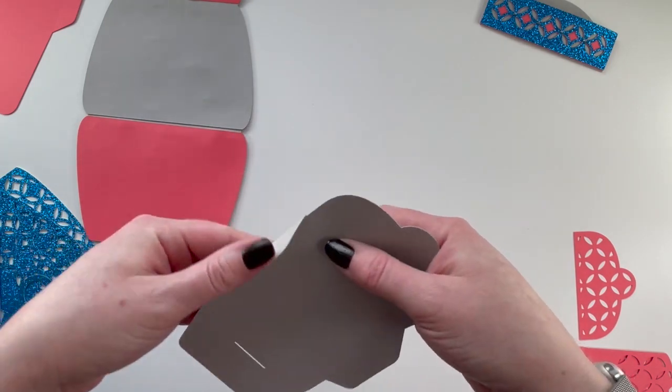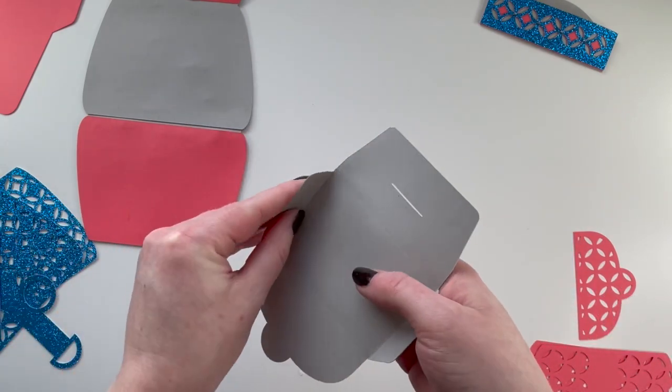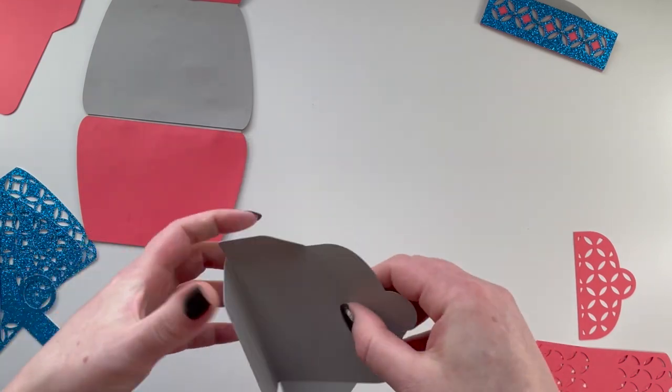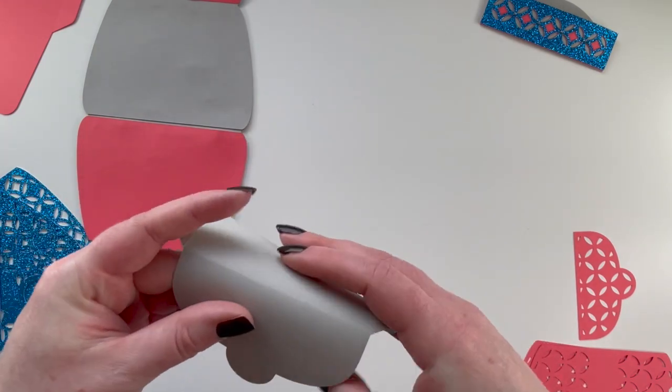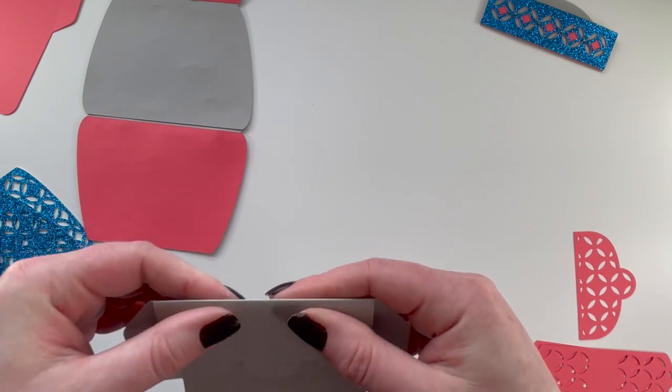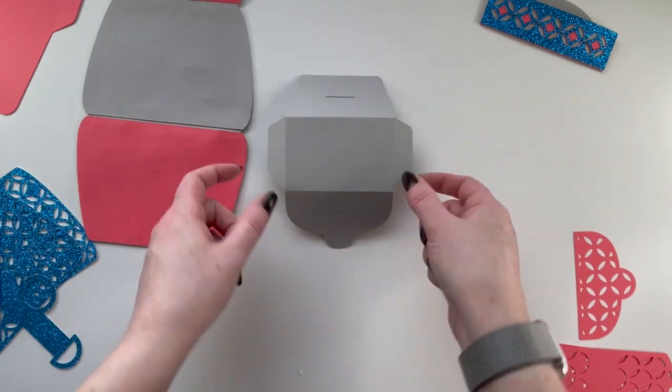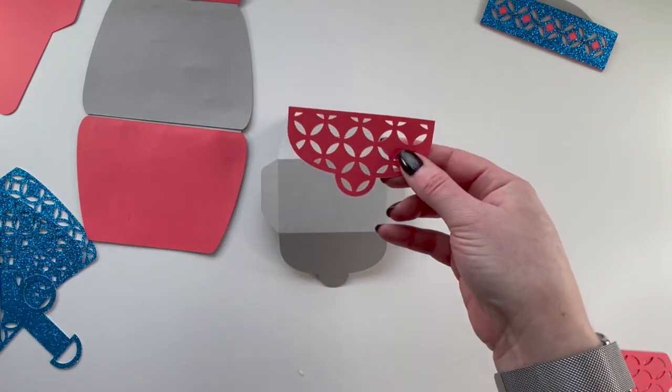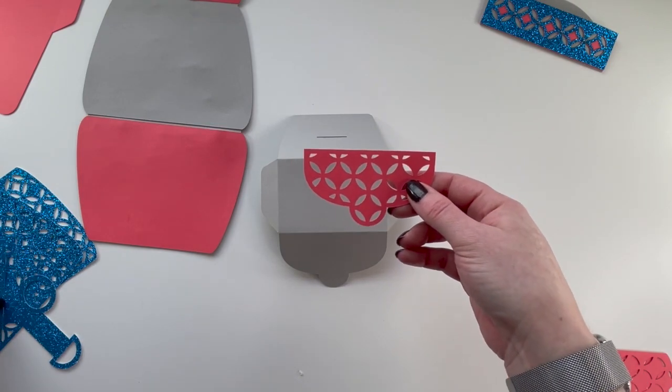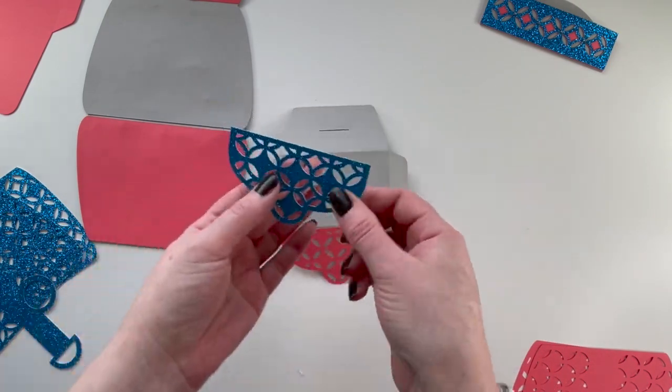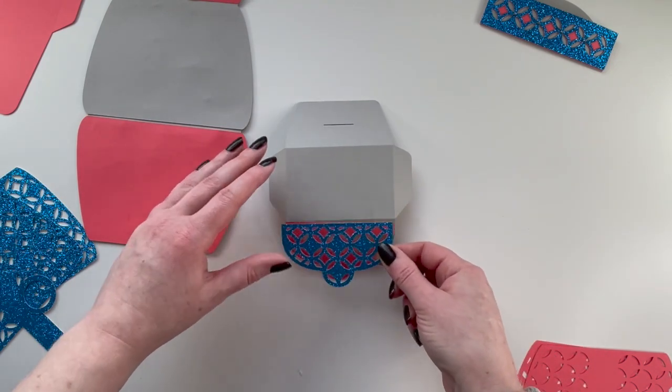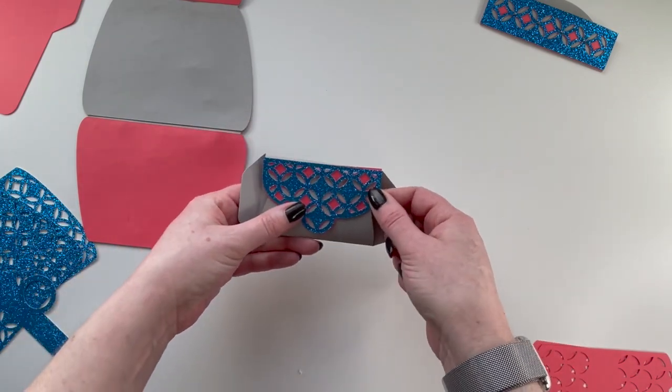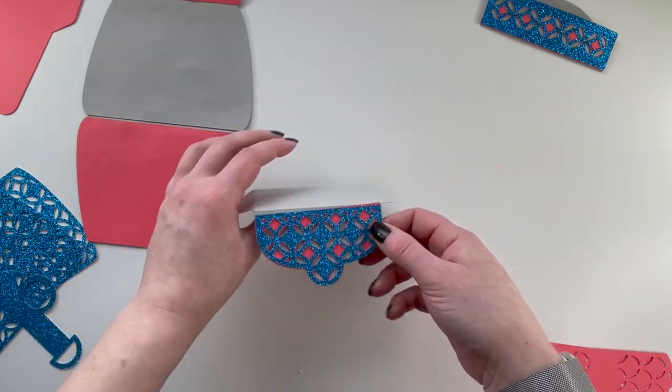Next thing we're going to do is grab your little envelope, and we're gonna build this one. So fold in your lines, they all fold inwards. But before we glue this together, we're actually going to add to this part here. So this is the inside, flip it over. This red piece goes there, then the blue piece goes on top. So then when it's all folded, it looks like that. So go ahead and get that glued on.